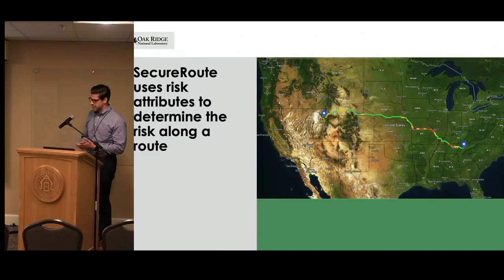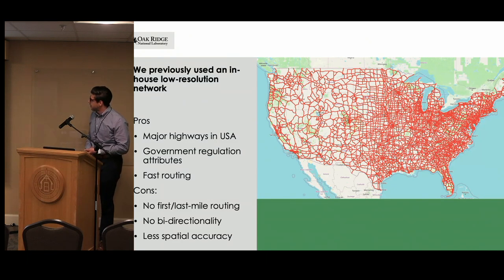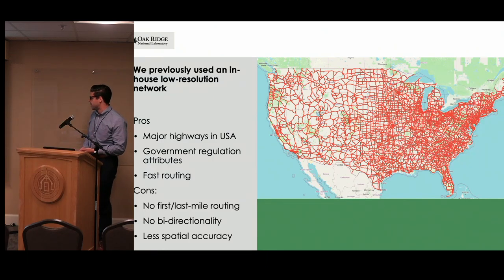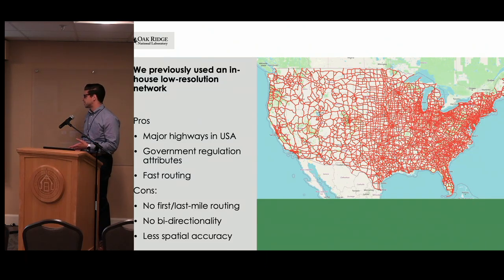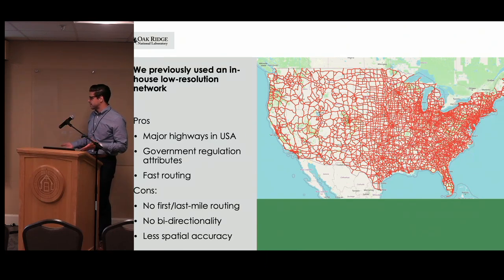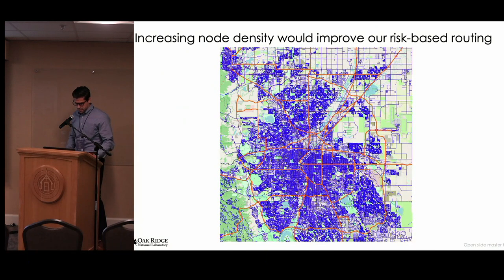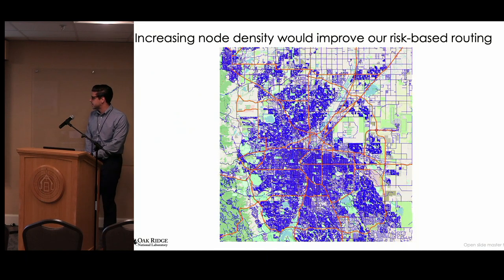Previously, all of this was done on an in-house routing network, and we're moving to OSM. The routing network we were using is called Trajus. The pros of it are that it has all the major highways in the United States, which gets you from Seattle to Miami, and for generating routes it's really fast because it is so simple — you can generate a route in an order of milliseconds to get across the country, whereas something like Google Maps takes 10 to 12 seconds. I included a snapshot of Denver: the orange lines are the Trajus network we use in-house, and the blue lines show the incredible increase in node density that we get from OSM.